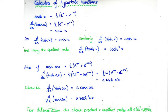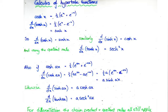In this video, I just want to look in particular at the differentiation of hyperbolic functions. We know that cosh x can be written in terms of exponentials as half e to the x plus e to the minus x. When we differentiate that, we get half e to the x, and when we differentiate e to the minus x we get minus e to the minus x. So overall we get half e to the x minus e to the minus x, which we know is sinh x. So when we differentiate cosh x, we get sinh x.